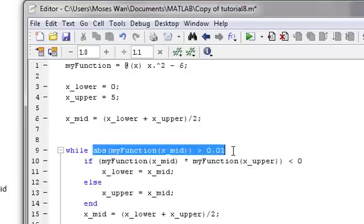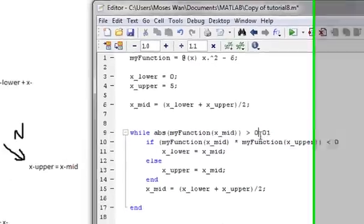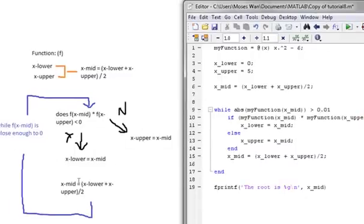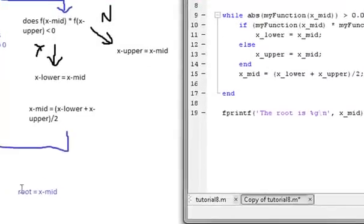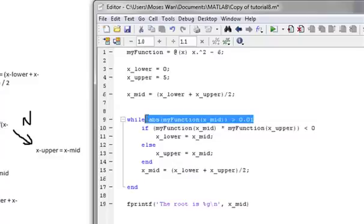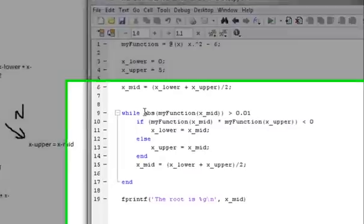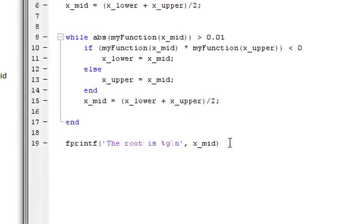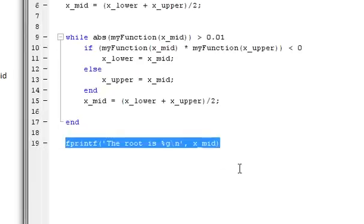If it is greater than 0.01, then just run this loop until x-mid, when you substitute that in, then this equation is proven false. That means it's in between negative 0.01 and 0.01. And then we'll just print it out as our result.